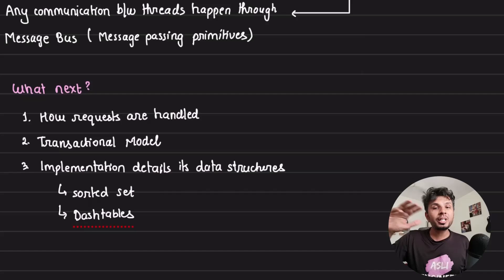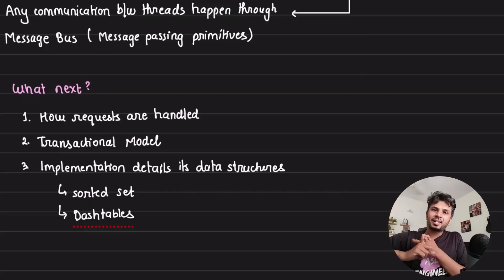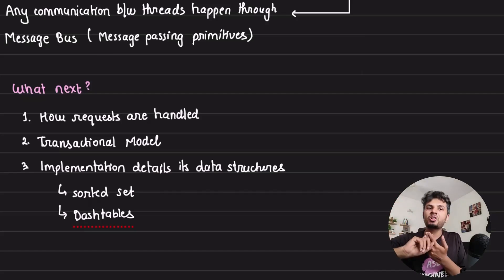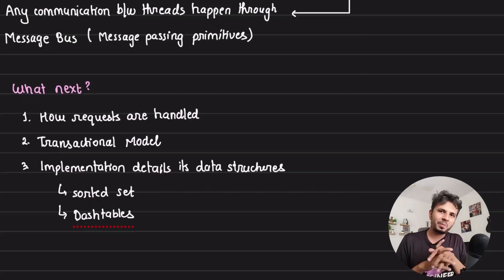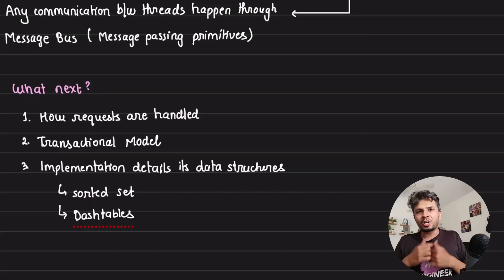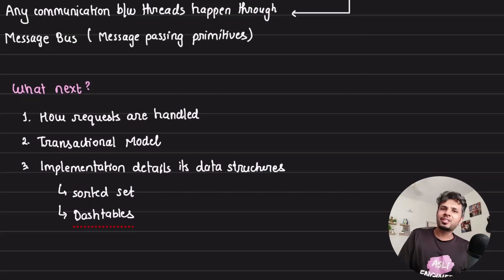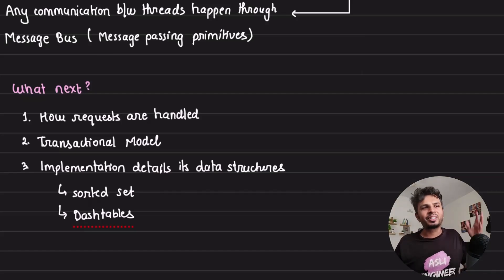This is just the first video in the series. Subsequent videos will go deeper into how requests are handled, the transaction model, and the implementation of key data structures like sorted sets and dash tables — with some beautiful optimizations there. That's all for this one — I hope you found it interesting. See you in the next one, thanks.